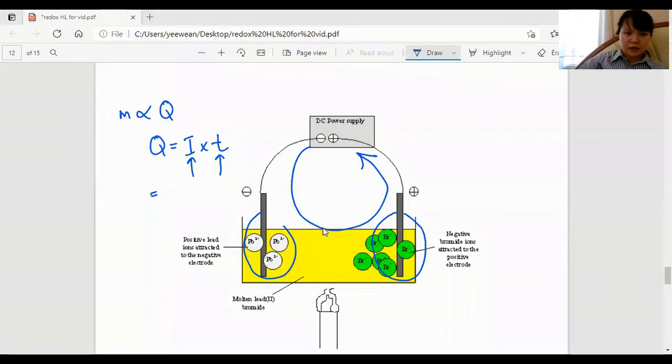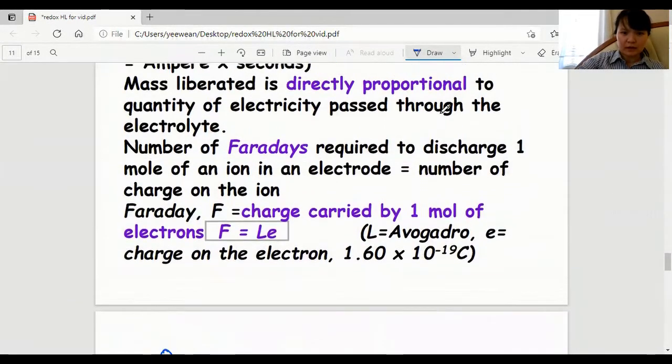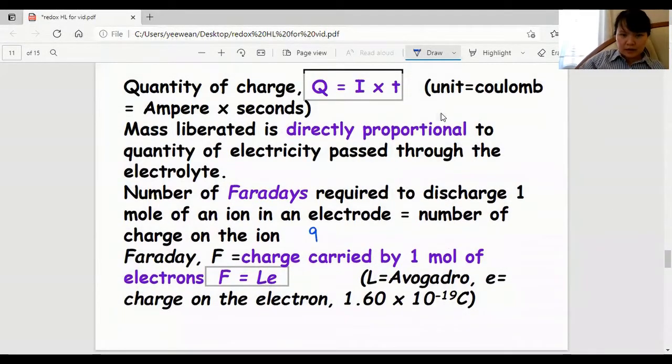This Q is also equal to NF, where N is the mole of electrons involved in the circuit, and F is the Faraday constant given in the data booklet as 96500 coulombs per mole. The number of Faradays required to discharge one mole of an ion in an electrode equals the number of charges on that ion.